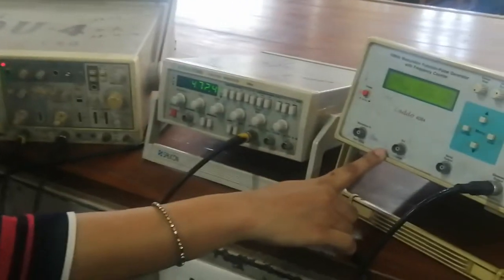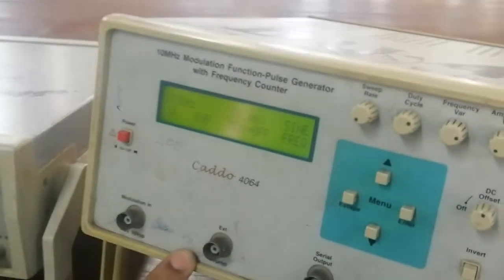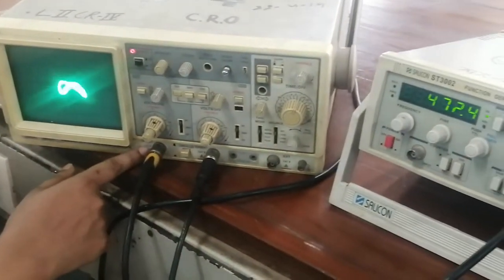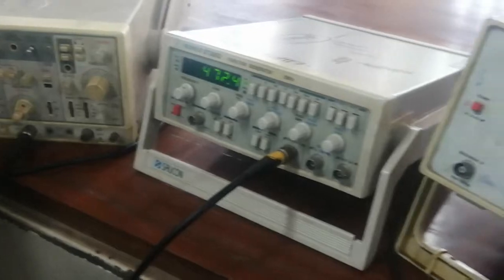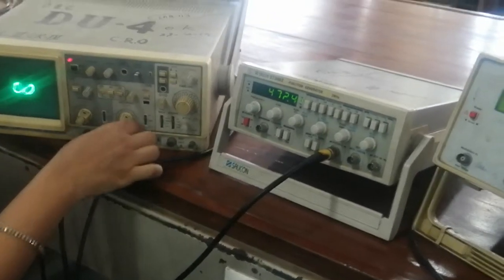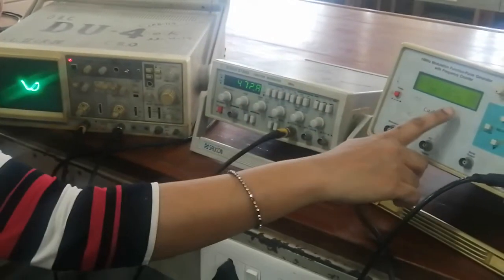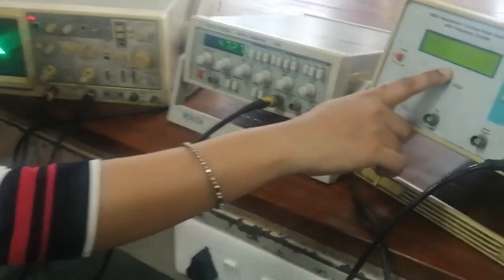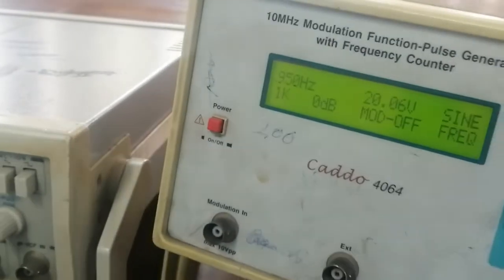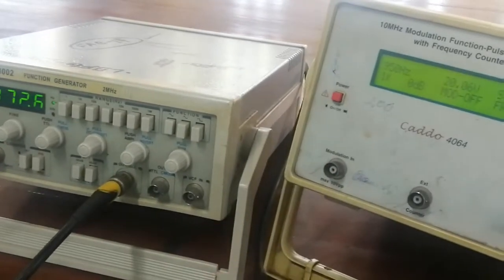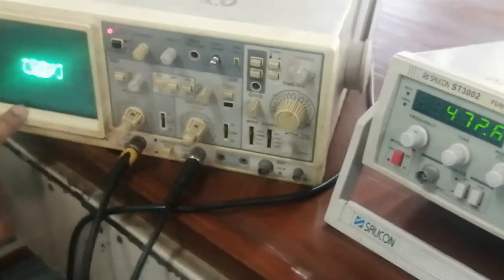Here we have used two function generators. One function generator is for the x-component of the frequency and the other is for the y-component. One function generator is connected to the x-channel of the CRO and the other is connected to the y-channel. Here we have set the frequency to 470 hertz and another to 950 hertz. They are in the ratio of approximately 1:2.